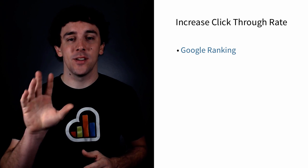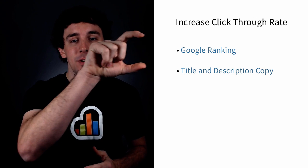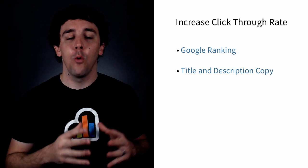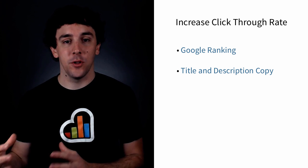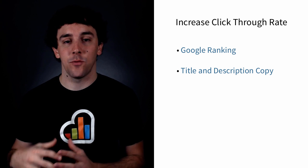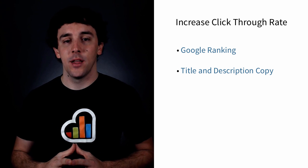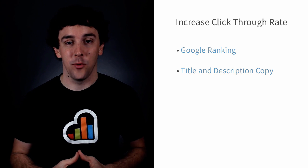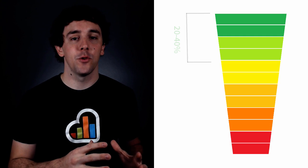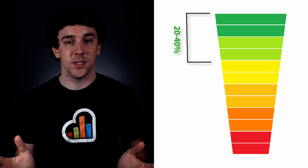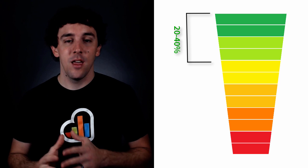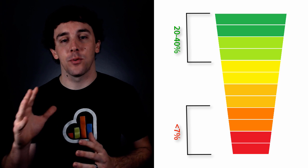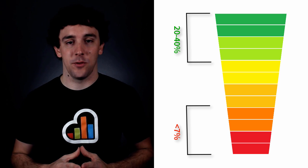And the second main factor is the copy — what is the title and what is the description that Google shows when people search for you? A well-written copy can convert really well. If it's relevant to what they search for, they're more likely to click on it. If it's completely irrelevant and it's poorly written, then they're probably not going to. If your click-through rates are between 20% and 40%, you're doing a great job. If they're under 7%, then you need to revisit these two things and improve them to increase your click-through rate.